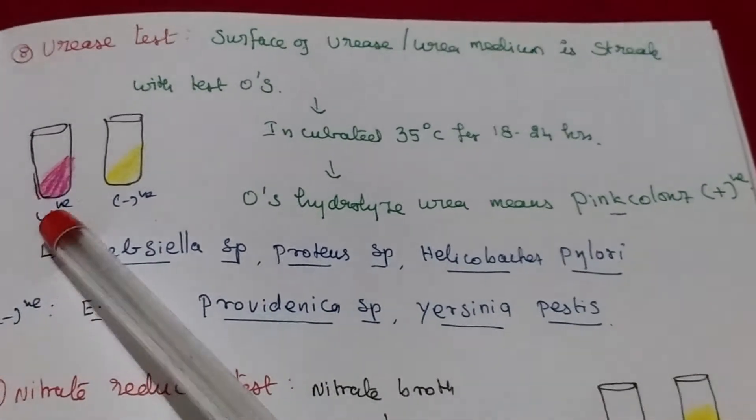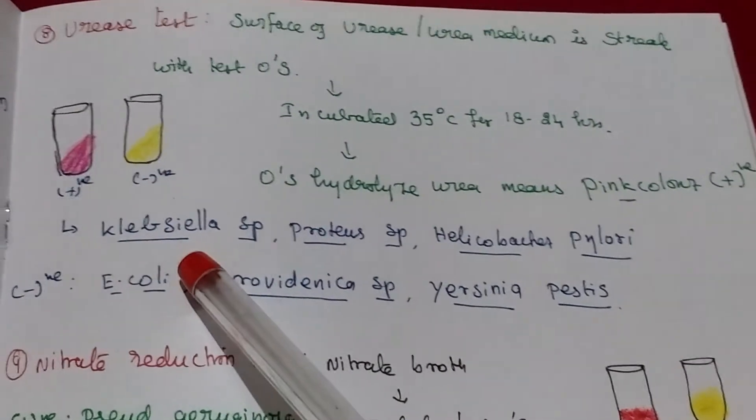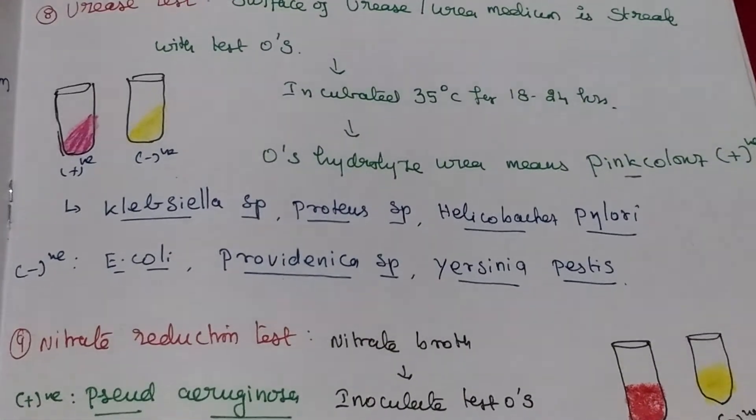Organism hydrolysis urea means it will produce pink color, otherwise no color changes. Positive organism Klebsiella proteus helicobacter. Negative organism E. coli Yersinia like that.